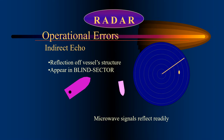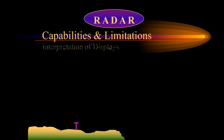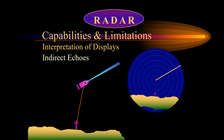In a blind sector no targets would be detected. If the obstruction can reflect a radar pulse, it is possible for the scanner to transmit a pulse and reflect that pulse off the obstruction, which could then hit a target. The target would reflect the pulse and the resultant echo could travel back, hit the obstruction, and then be reflected back into the scanner. The echo from the target would arrive indirectly via the obstruction, and hence a target would appear in the direction of the shadow sector or blind arc.